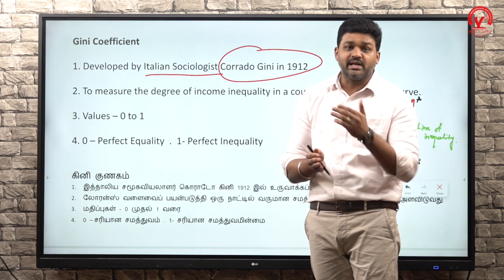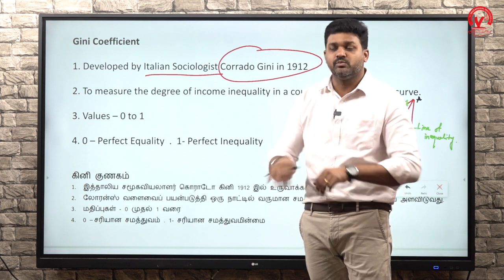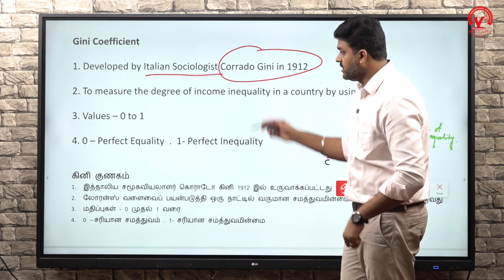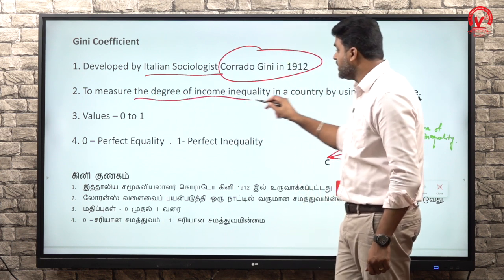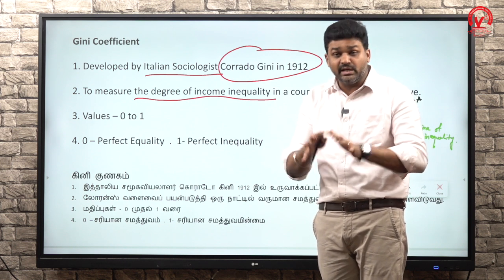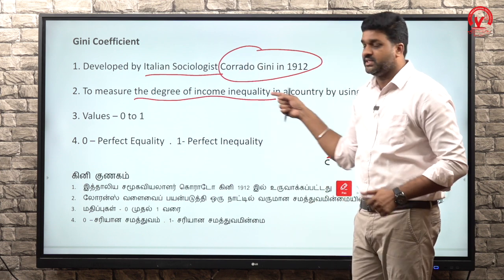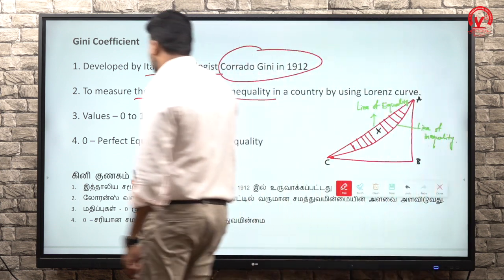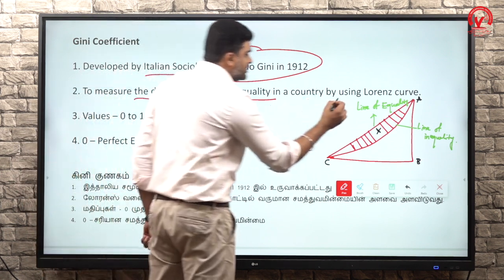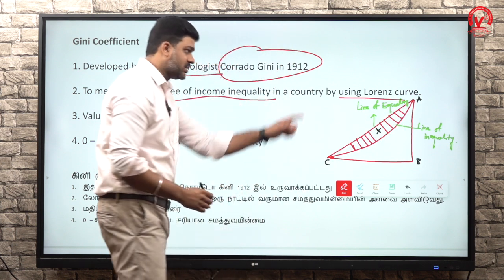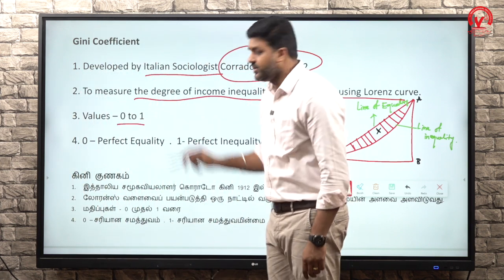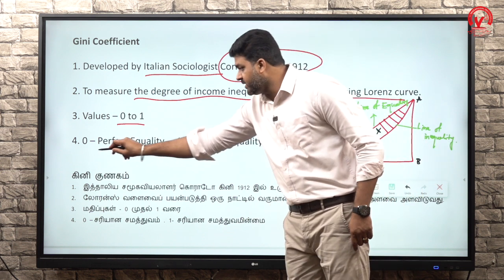Whether income distribution is equal or unequal - the Gini Coefficient measures income inequality in a country. If you want to measure the degree of income inequality in a country, you use the Lorenz Curve, and from that, we can measure the value using the Gini Coefficient.